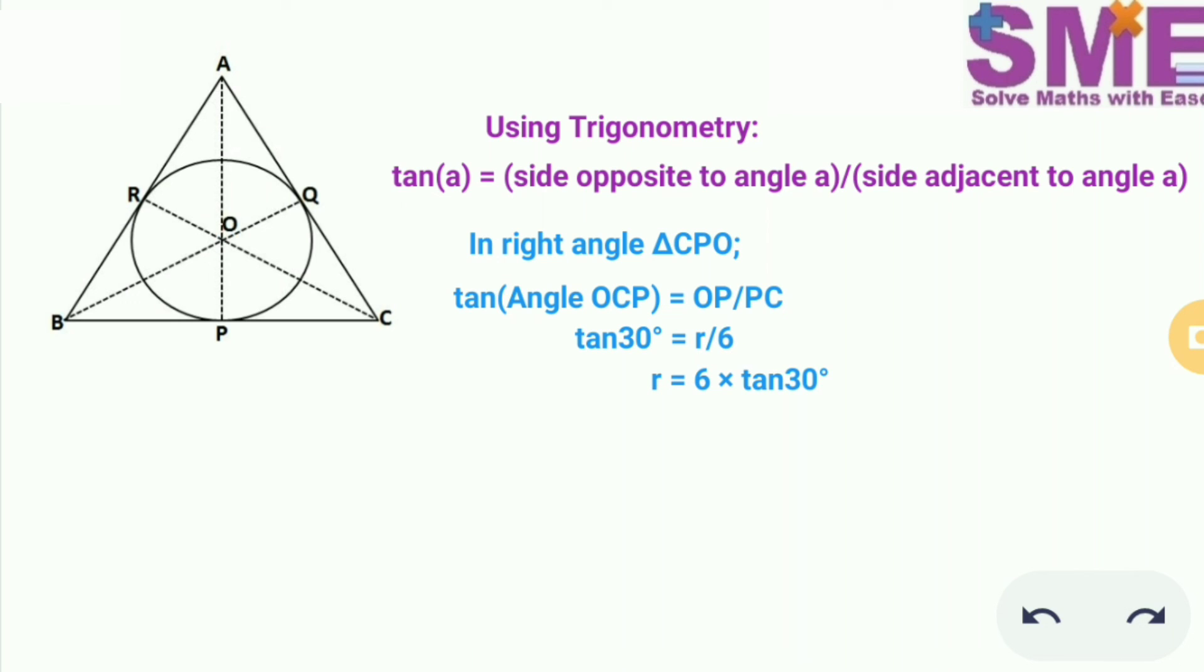So tan 30 degree into 6 is equal to the radius of the circle. Further simplifying we will put the value of tan 30 is equal to 1 upon root 3 and we can write 6 as 2 into 3.